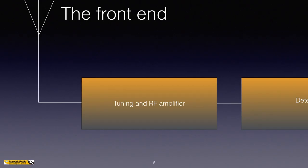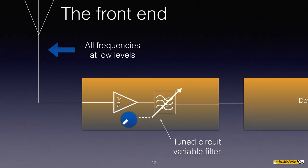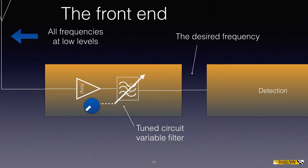This is also called the front end, because it's the front end of the receiver — the bit that's connected to the antenna. All of the frequencies being received by the antenna will be passed to the front end, but at very low levels. The first block is the amplifier, which boosts those low levels up a little bit. Then there's a tuned circuit, which is a variable filter, and the knob is rotated adjusting the tuned circuit to select only the desired frequencies. In other words, we tune for the channel that we want, so we have the desired frequency coming out of the front end.